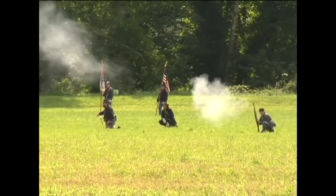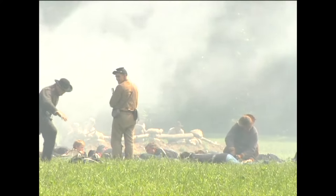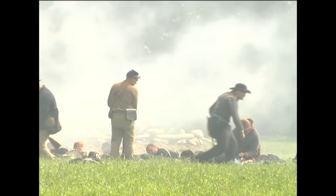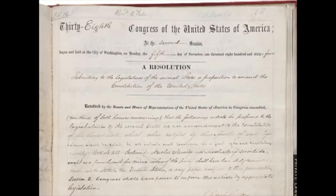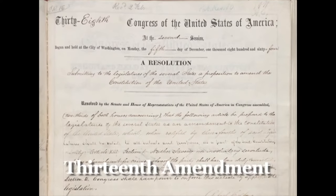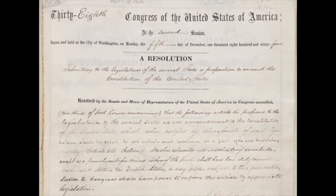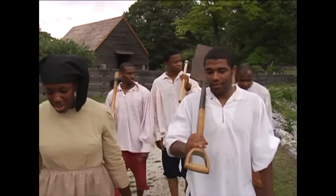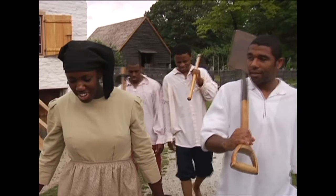The war now had two purposes: to preserve the Union and to end slavery. The war continued until 1865, and in the end, the Union armies were victorious. The Confederate States became part of the United States again, and slavery in America had ended. All that remained was for the abolition of slavery to be added to the Constitution. The 13th Amendment made it illegal for slavery to exist in the United States, and it was ratified in December of 1865. The dream of so many people who had opposed slavery had finally come true — slavery was finally abolished in America.